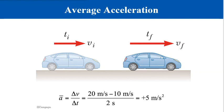Imagine the car accelerates from an initial velocity to a final velocity in a time interval of two seconds, with both velocities directed toward the right, so the object is accelerating in a positive direction. Acceleration is a vector quantity having dimensions of length divided by time squared. The average acceleration for this car is positive 5 meters per second squared.